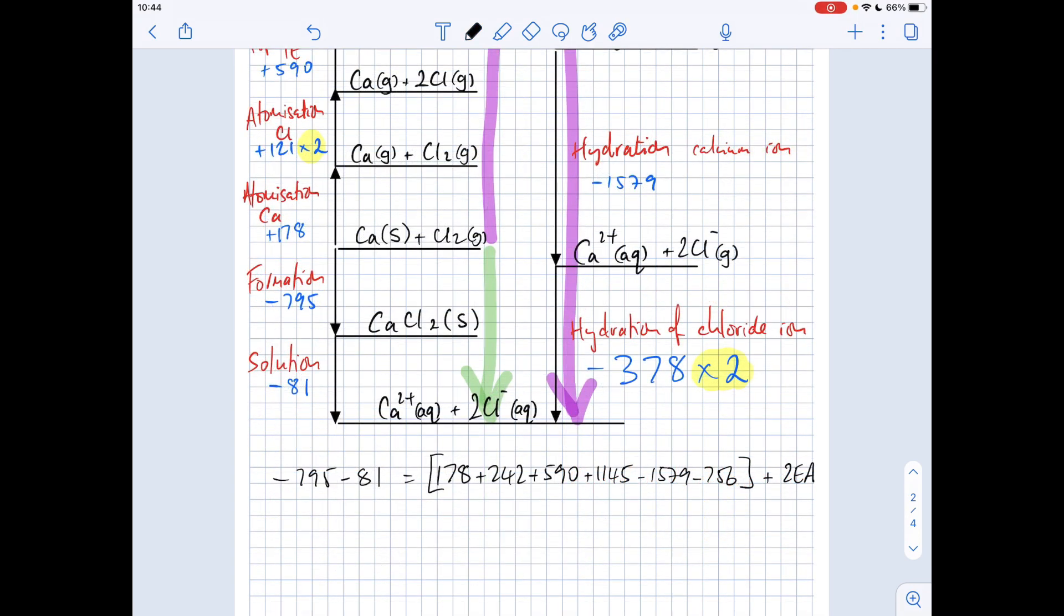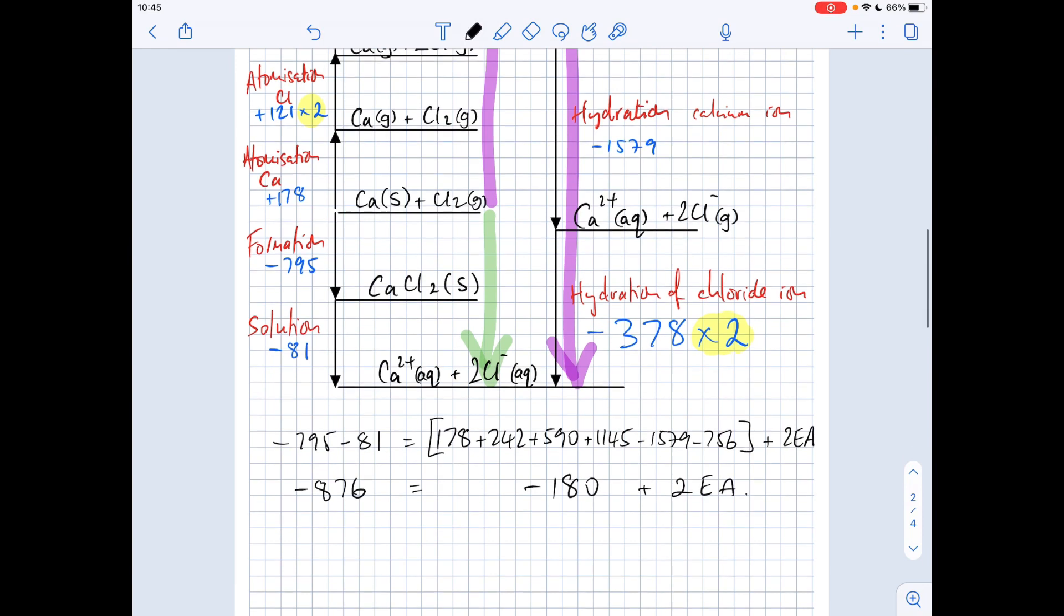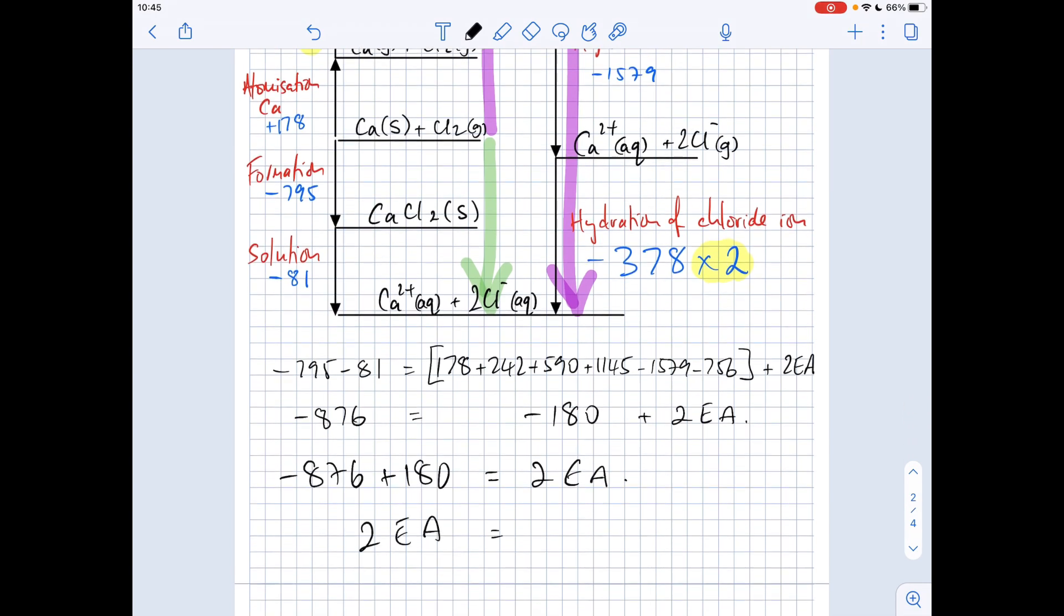So there's the numbers in there. So we'll just work out what each side equals. So this is minus 876. The big bracket is minus 180. And then obviously we've got that plus two electron affinities. So then we need to get the electron affinity by itself. So minus 876. That minus 180 becomes plus when it goes on the other side. Plus 180 is 2EA. So 2EA equals minus 696. So EA is minus 696 over 2, which is minus 348. Obviously that's kilojoules per mole.